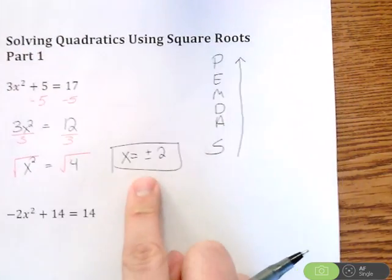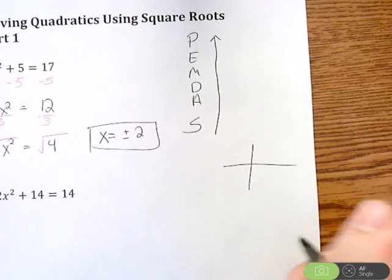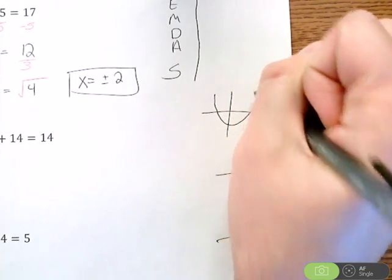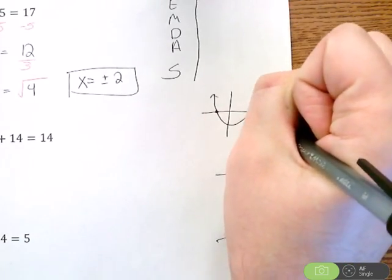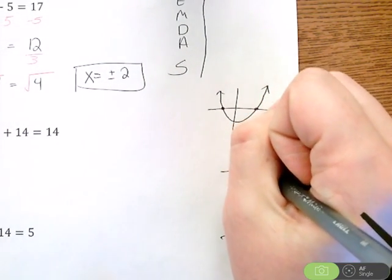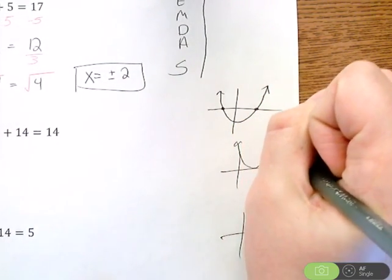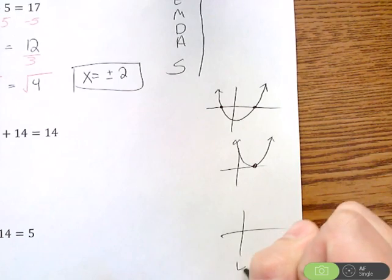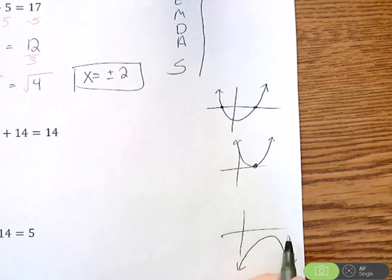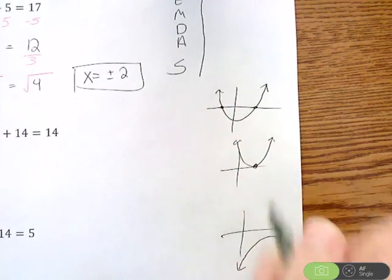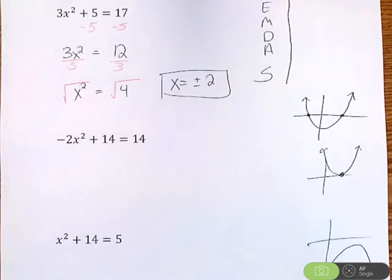Now, one thing I want to talk about with this is when we did solving quadratics by graphing, we had three scenarios show up. We could have a quadratic that goes through and intercepts the x-axis twice, two solutions. That's why we have positive 2 and negative 2 here. We could have a quadratic that's going to come down and touch once, which is one solution. And we might see that in our further examples. Or we could have a quadratic that is going to not intercept the x-axis at all, which would be no solution. So we might have a plus or minus, we might just have one answer, or we might have no solutions.